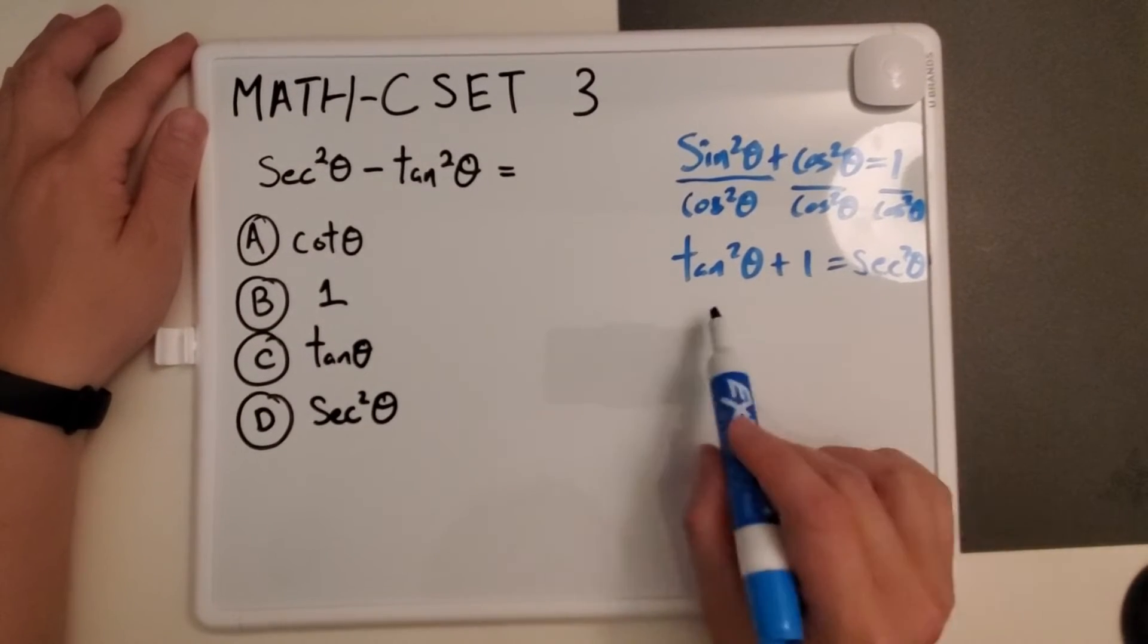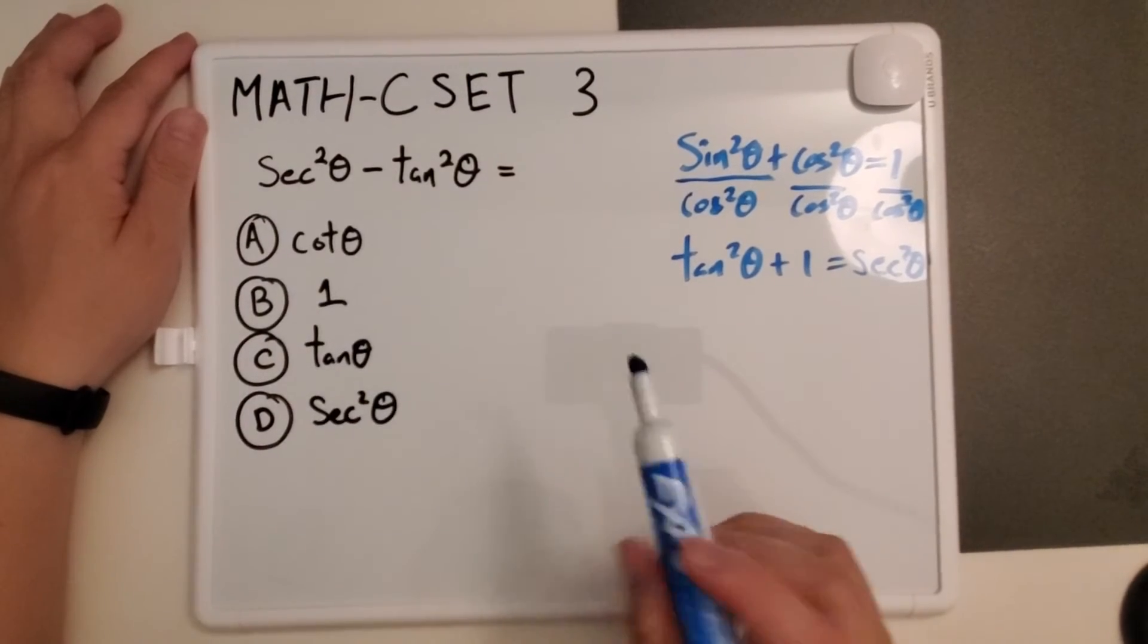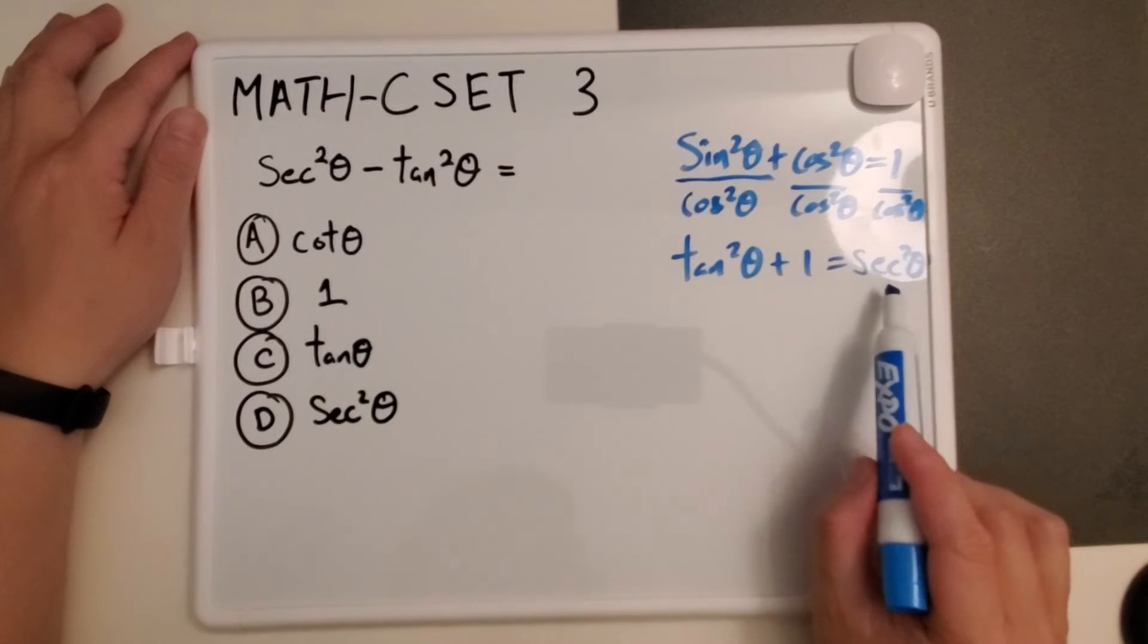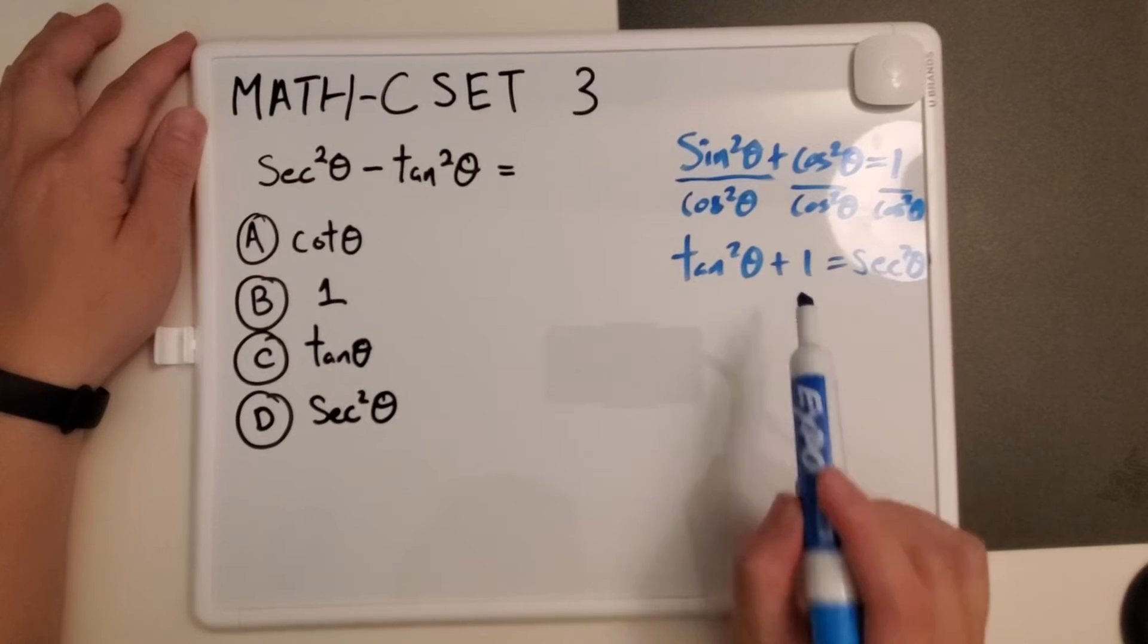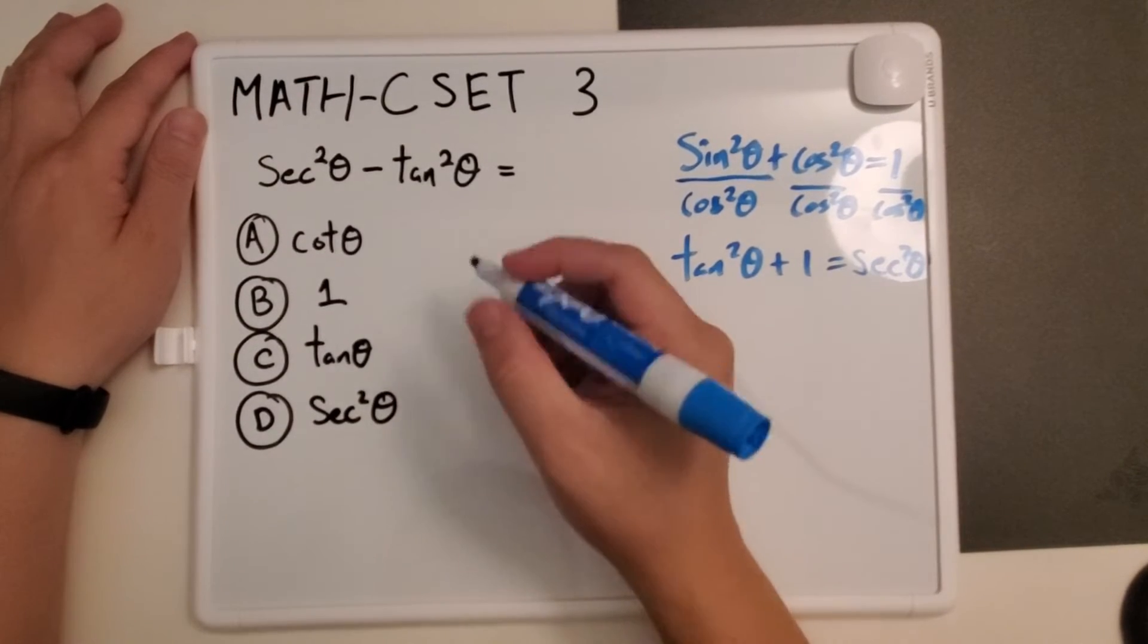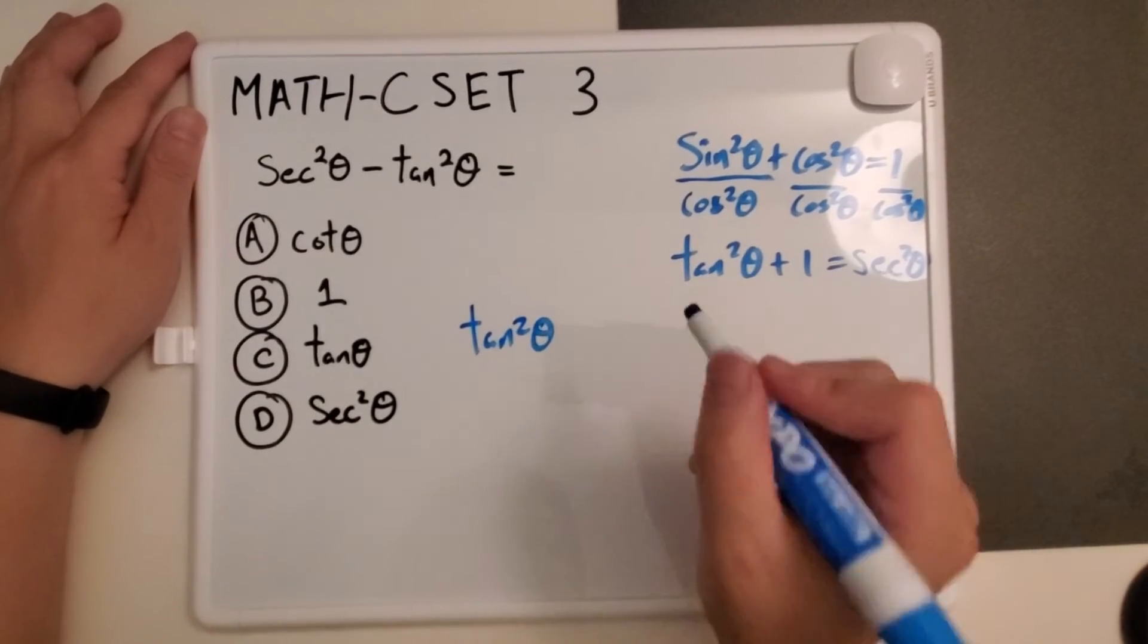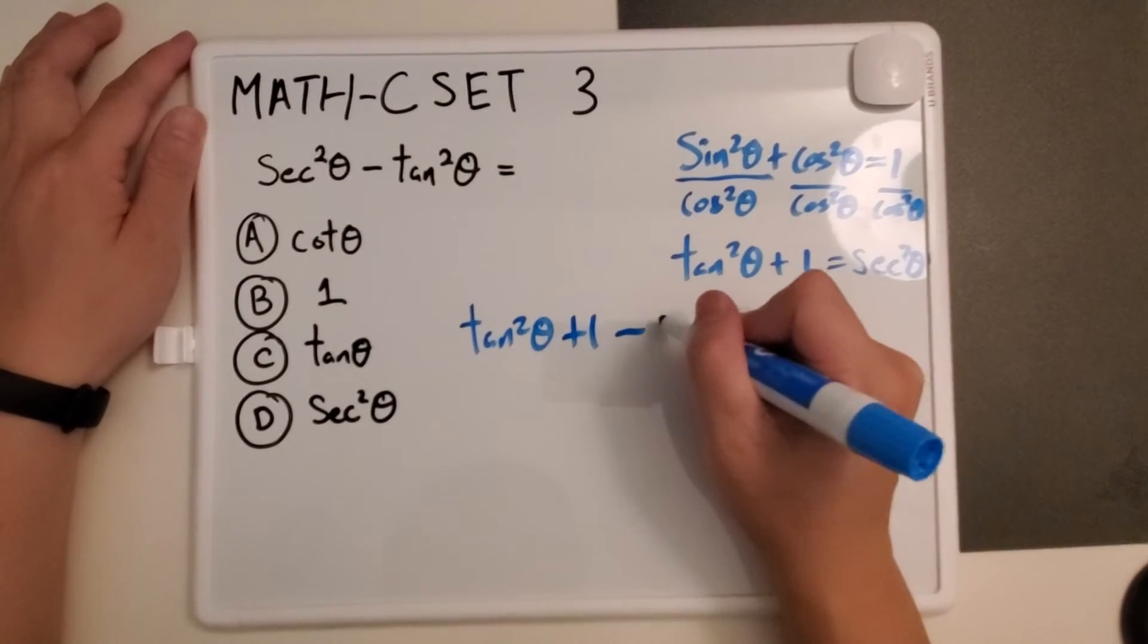If we see that this is secant squared theta, secant squared theta is actually equal to tangent squared theta plus 1. So we can substitute. We can have tangent squared theta plus 1 minus our tangent squared theta.